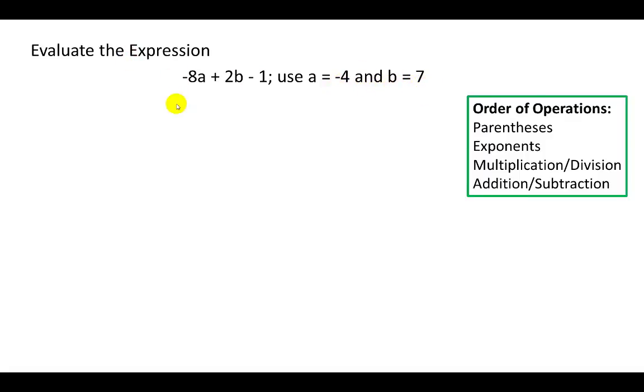So I'm going to take the a value and make it become -4. And I'll take the b value and plug in 7.